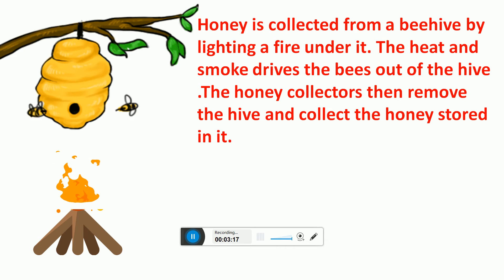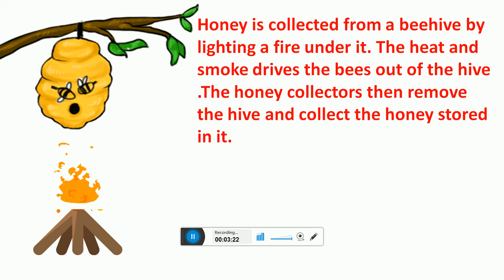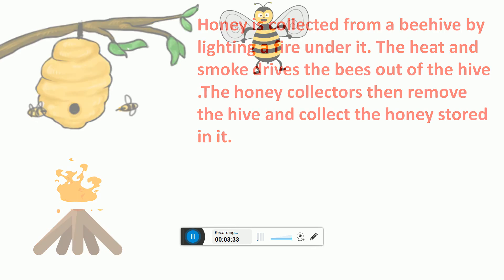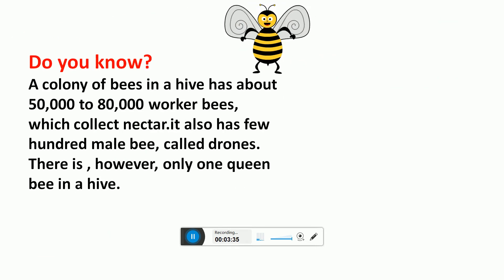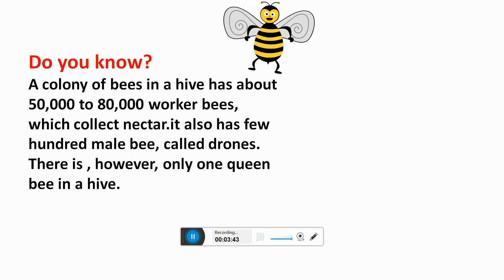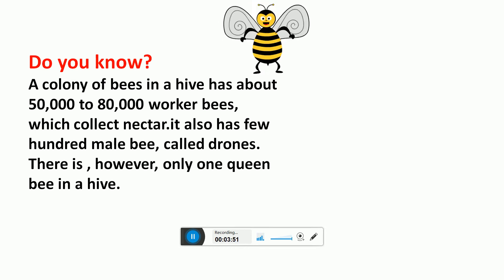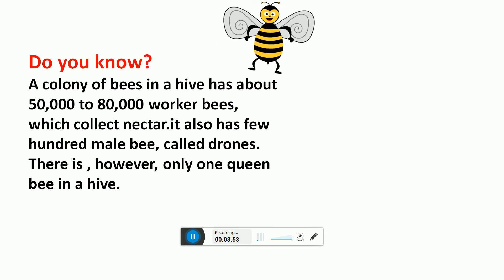Honey is collected from a beehive by lighting a fire under it. The heat and smoke drives the bees out of the hive. The honey collectors then remove the hive and collect the honey stored in it. Do you know? A colony of bees in a hive has about 50,000 to 80,000 worker bees which collect nectar. It also has a few hundred male bees called drones. There is however only one queen bee in a hive.